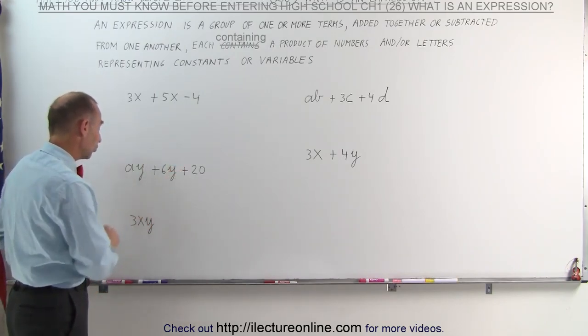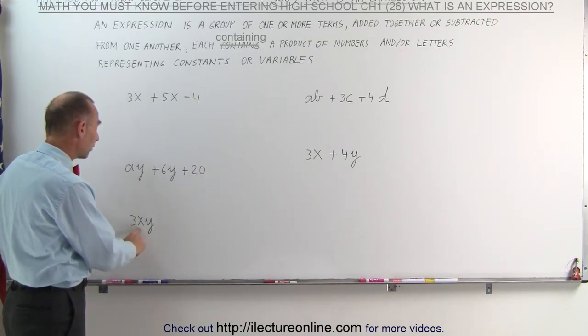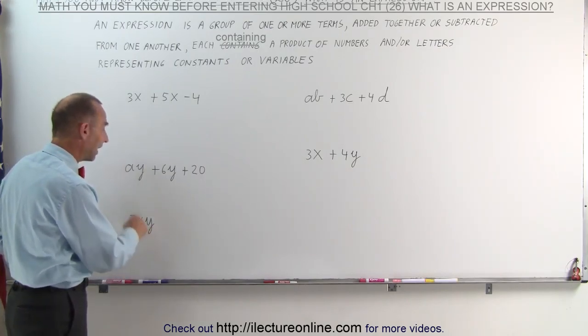And here we simply have a single term that's still called an expression. It doesn't have to be more than one term, it can be a single term, 3 times the product of two unknown variables, x and y.